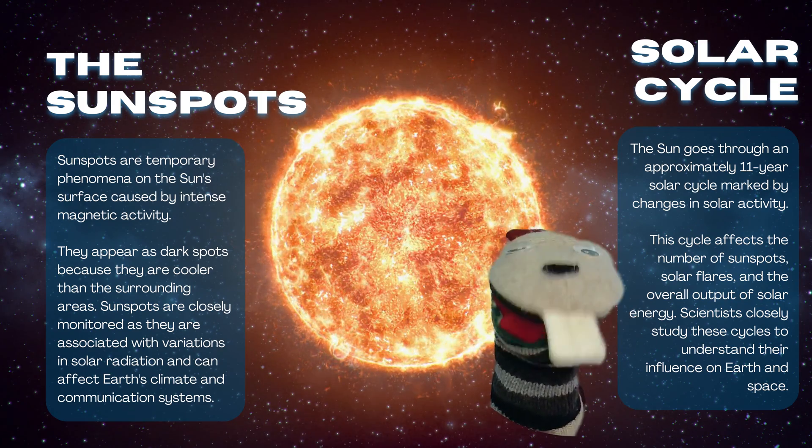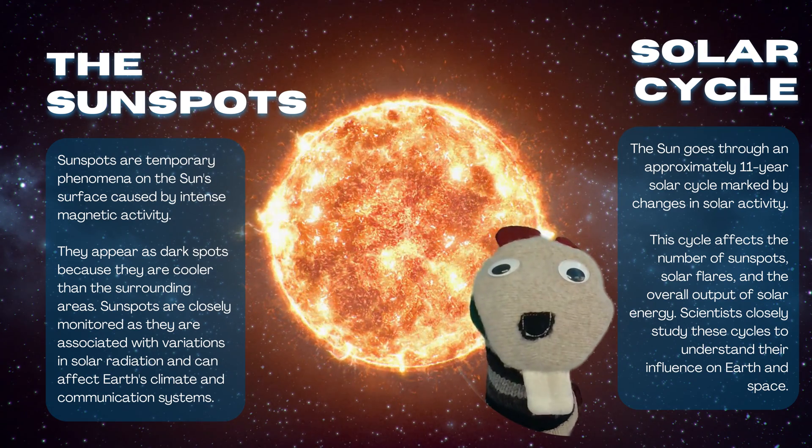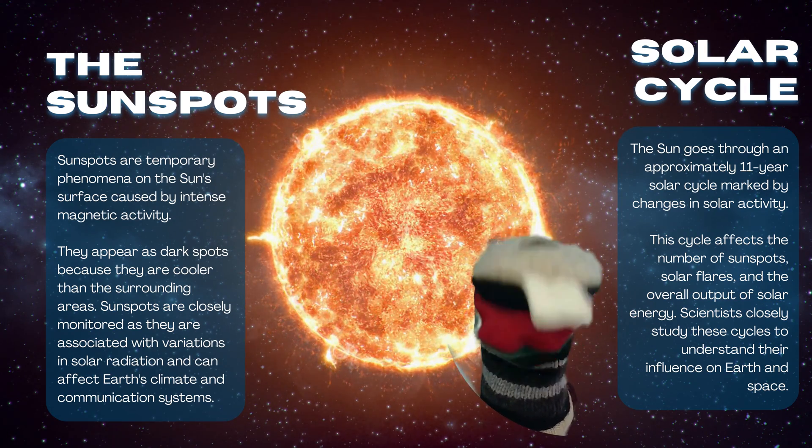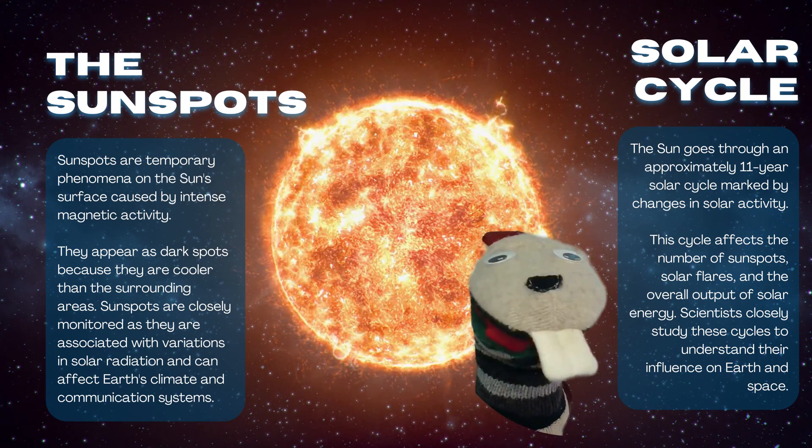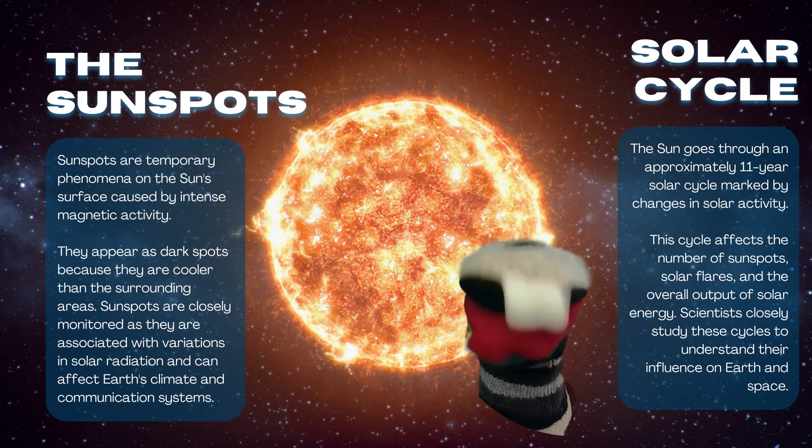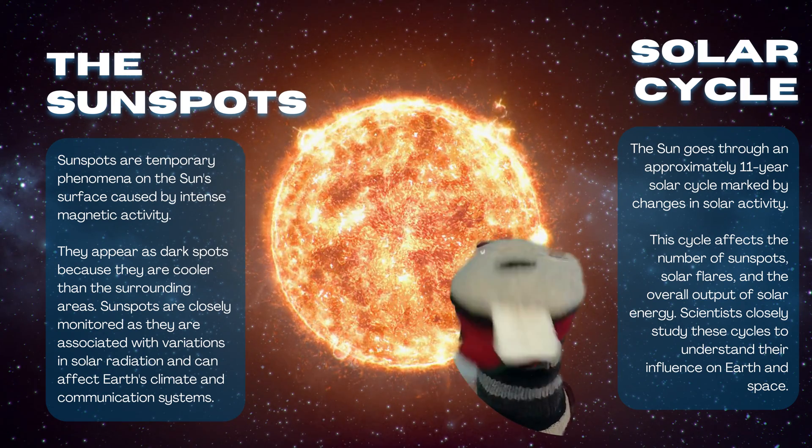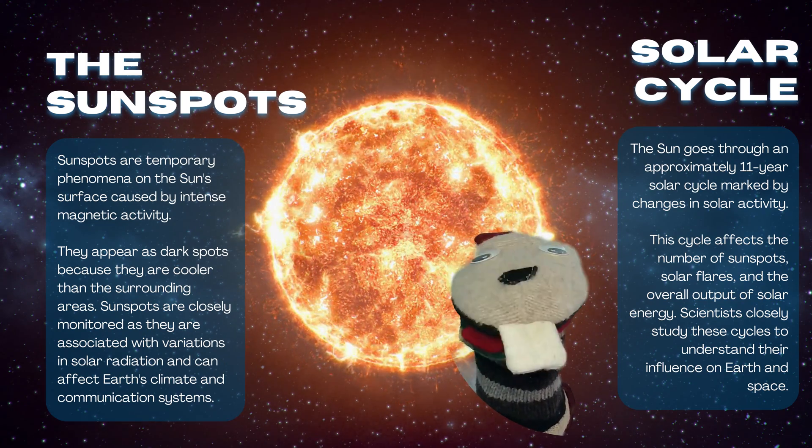I don't know if you know this, but the sun has spots, sunspots. But they're temporary. You can sometimes see them on the sun's surface caused by intense magnetic activity. They appear as dark spots because they are cooler than the surrounding areas.